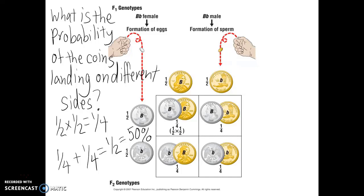Looking at our Punnett square and asking the same question — what's the probability of two coins not landing on the same sides? — it could happen in one box or the other box. That adds up to two out of four, or one-half of the time. So really, we've been using both the rule of multiplication and the rule of addition in these Punnett squares all along.